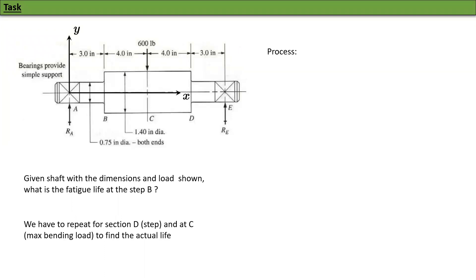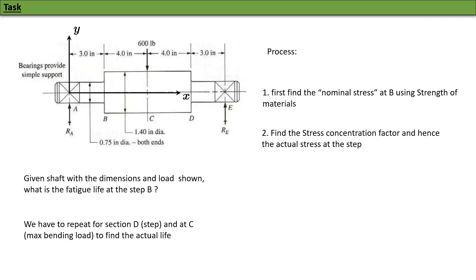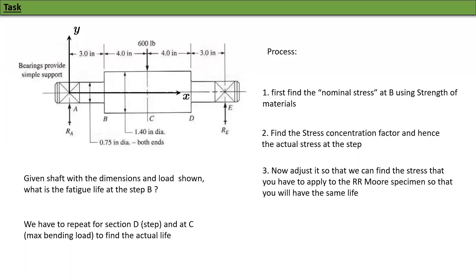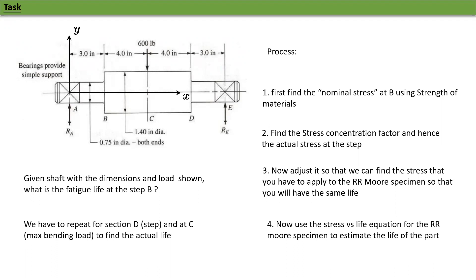What's the process? There are four major items. First, find the nominal stress at B — that's from strength of materials and doesn't account for the step geometry. Second, account for stress concentration factors at the chamfer or root radius. Third, make corrections because this is not the R.R. Moore specimen — you need to figure out what equivalent stress to apply to the R.R. Moore bending specimen to get the same life. Fourth, use the stress versus life equation for the R.R. Moore specimen to estimate the life of the part.